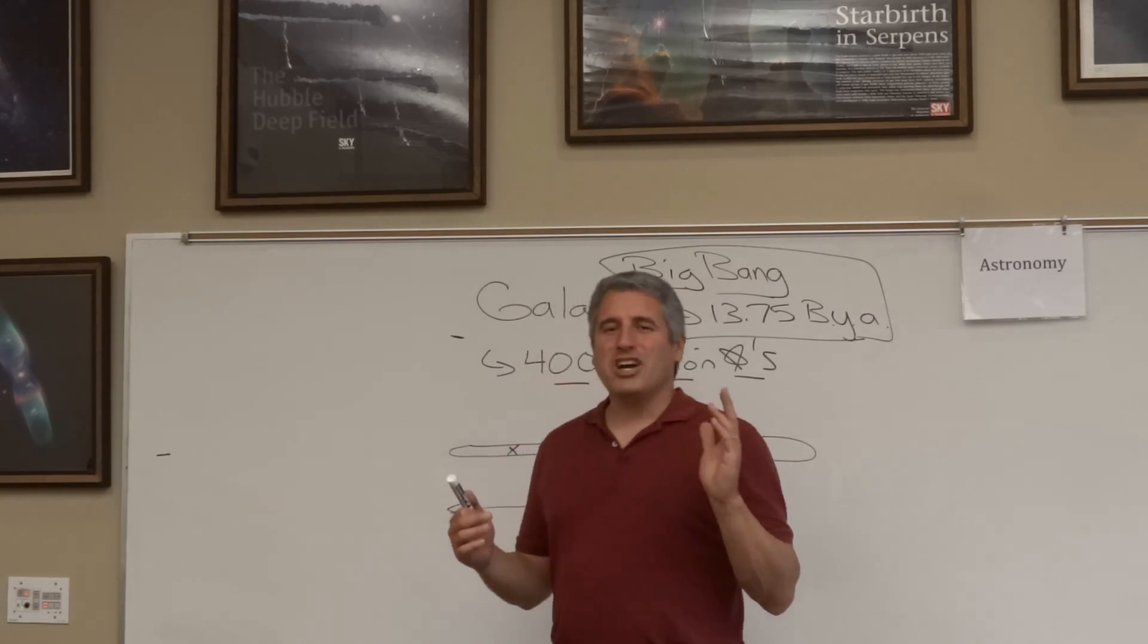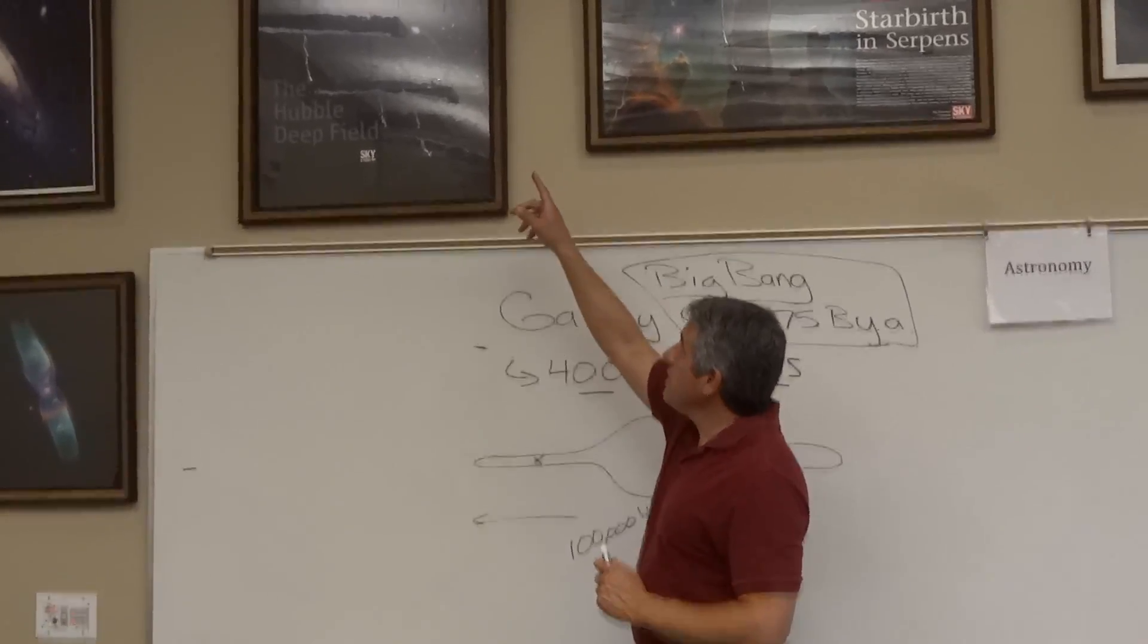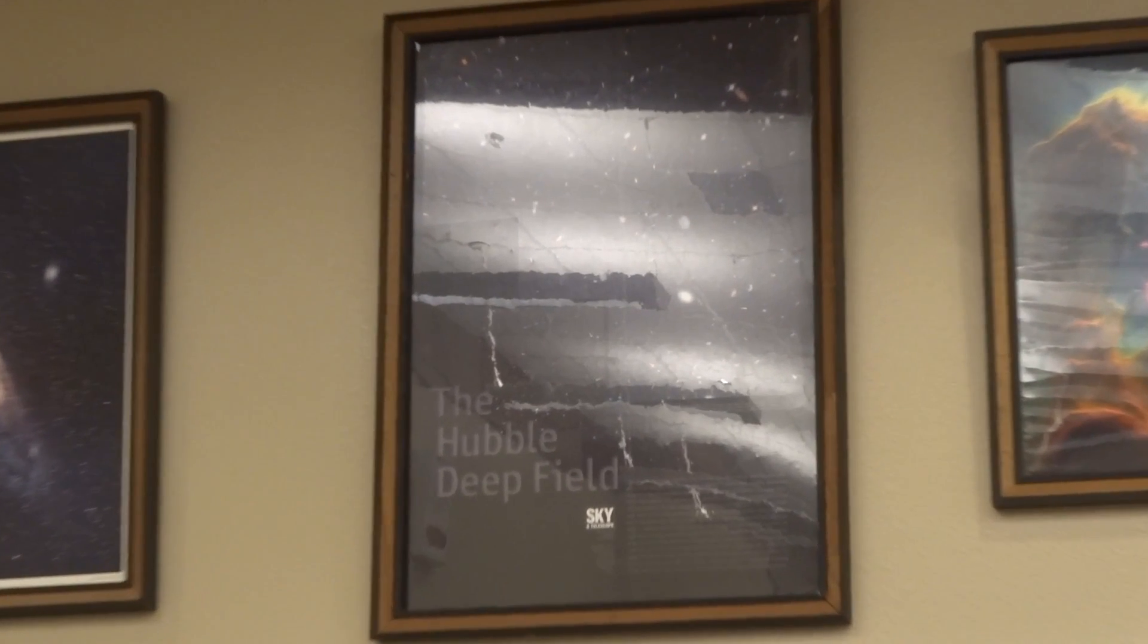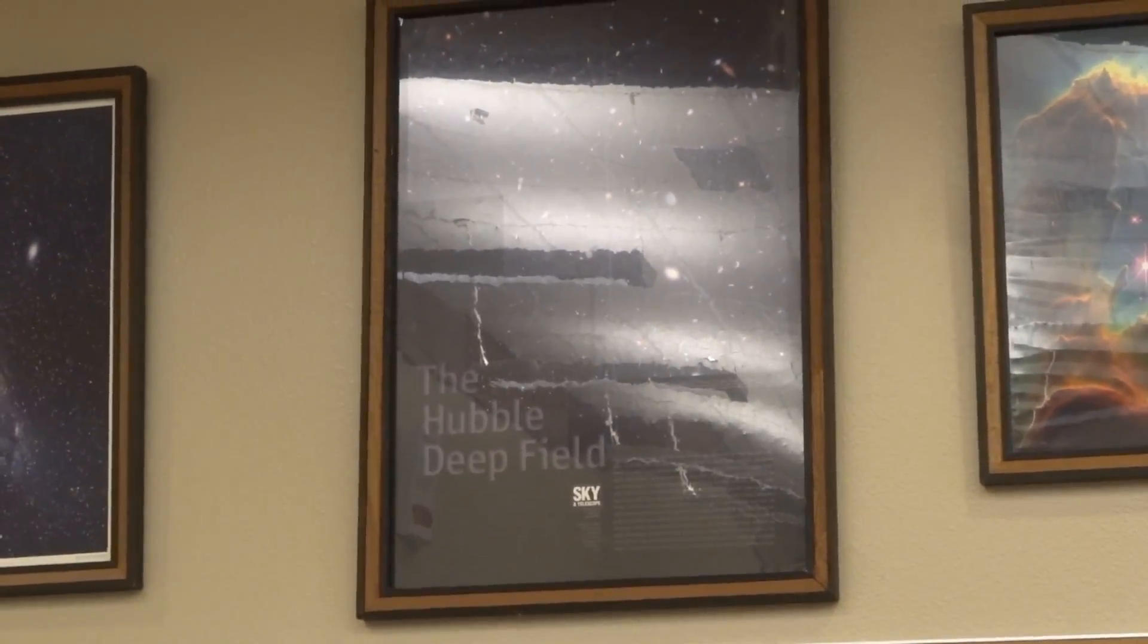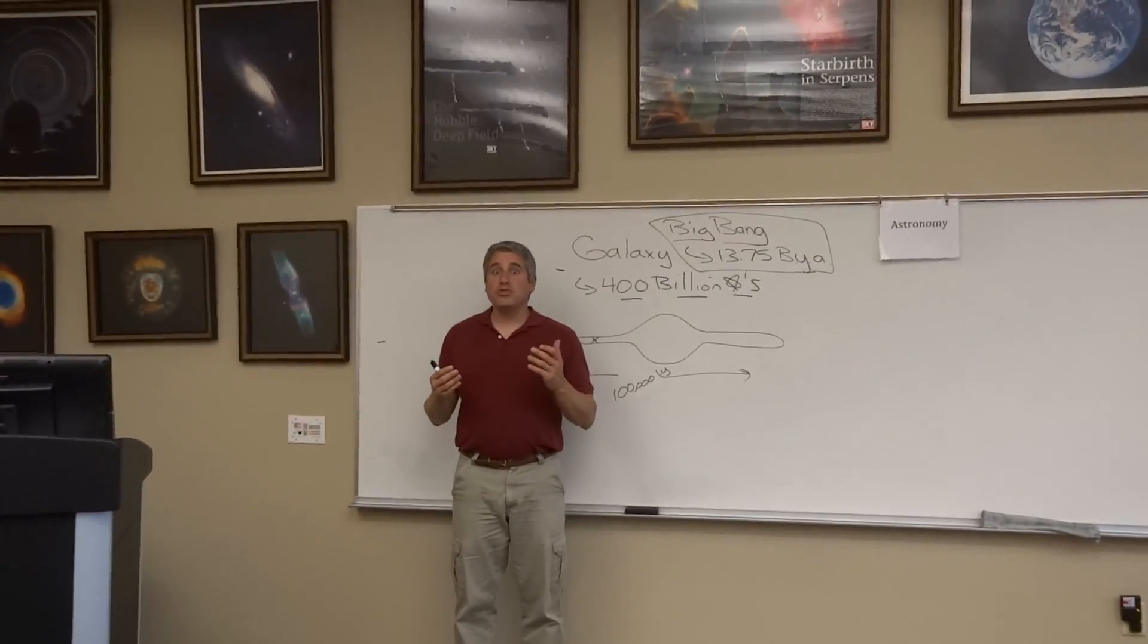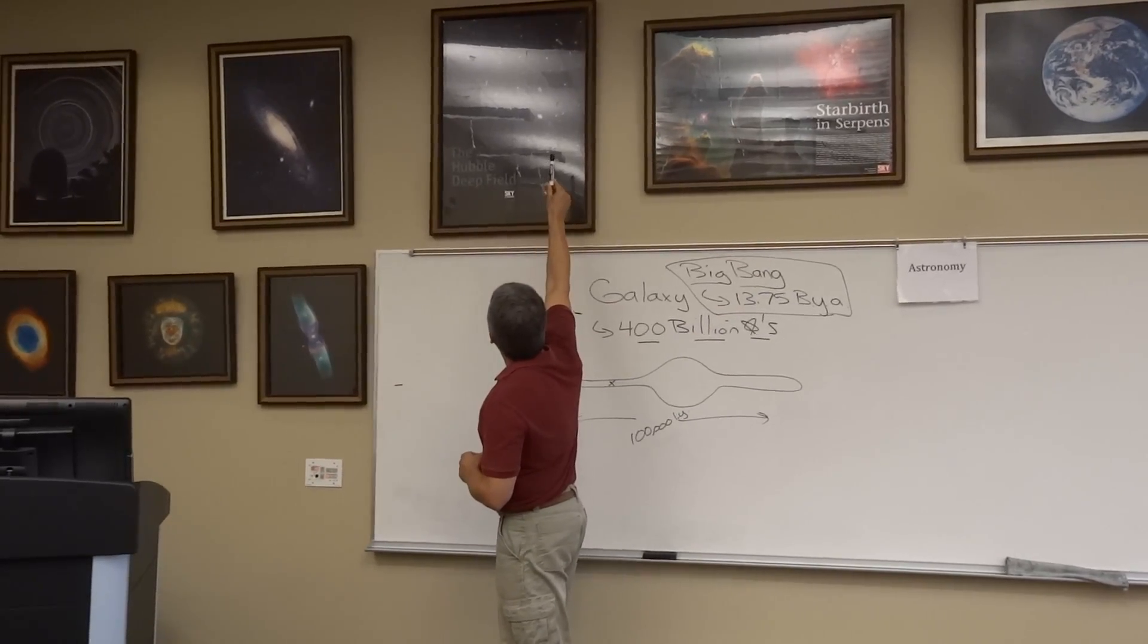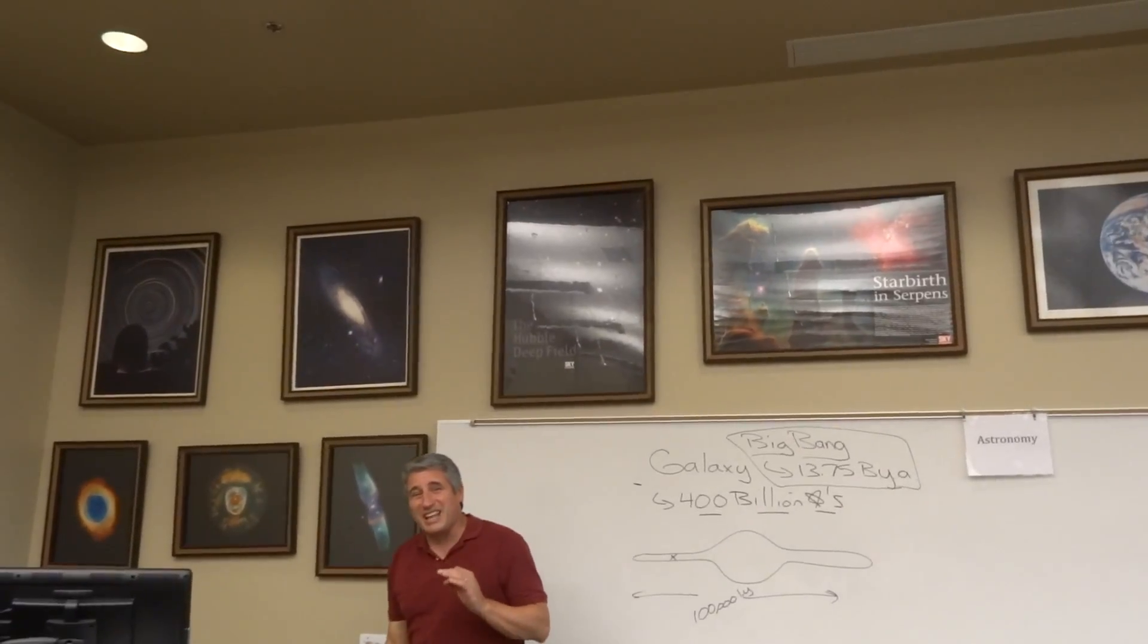Take a look at an image on the web called the Hubble Deep Field. There's a picture of it here, but even in poster form, it doesn't do it justice. The Hubble Deep Field is a spot in the sky that Hubble looked at for 100 hours straight, allowing it to see all the way to the edge of the universe and photograph over 1,500 galaxies. With the exception of a couple little stars, everything you're looking at is another galaxy.